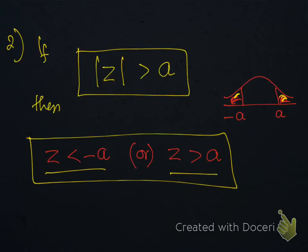Property number 2 for modulus: When we have the greater sign, the solution of the inequality will be z < -a and z > a. These are the required regions.